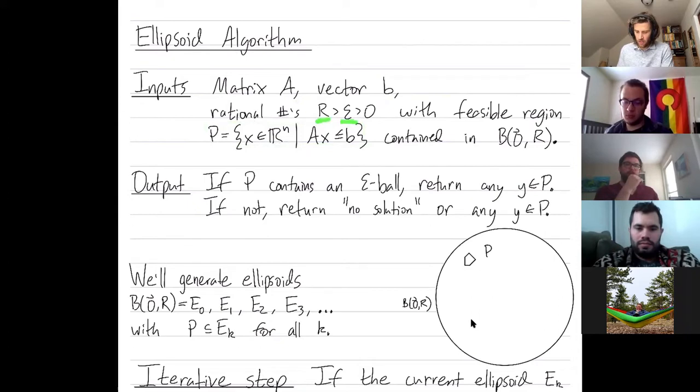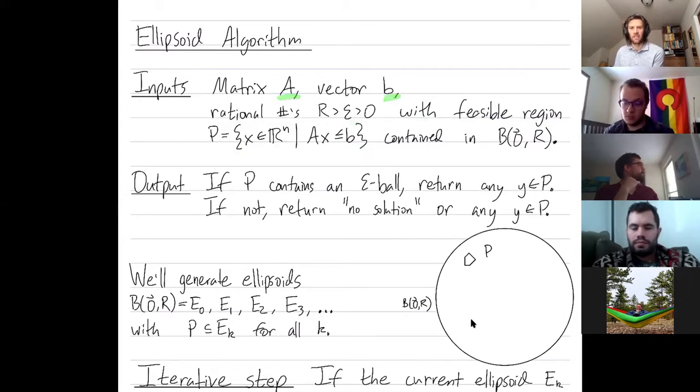Our other two inputs are epsilon and R. We're assuming that our feasible region is contained inside this large enough ball, and we're trying to decide if the feasible region has an entire epsilon ball worth of solutions. In practice, R and epsilon are determined in terms of the input size of matrix A and vector B.